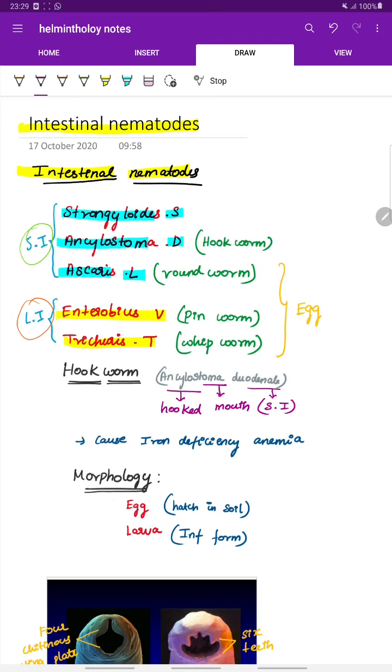Ankylostoma duodenale is called hookworm, Ascaris lumbricoides is roundworm, Enterobius vermicularis is pinworm, and Trichuris trichiura is whipworm. For Ascaris, Enterobius, and Trichuris trichiura, the infective form is the egg.